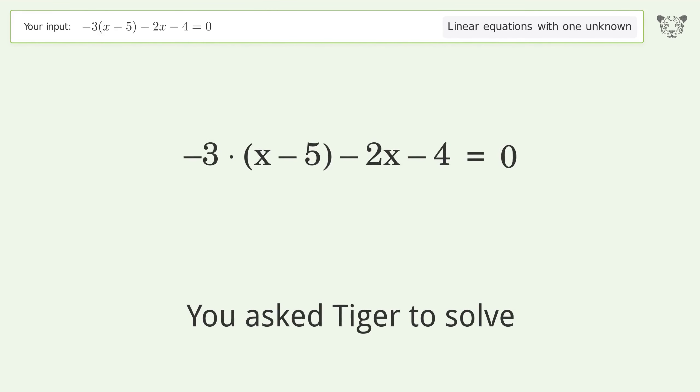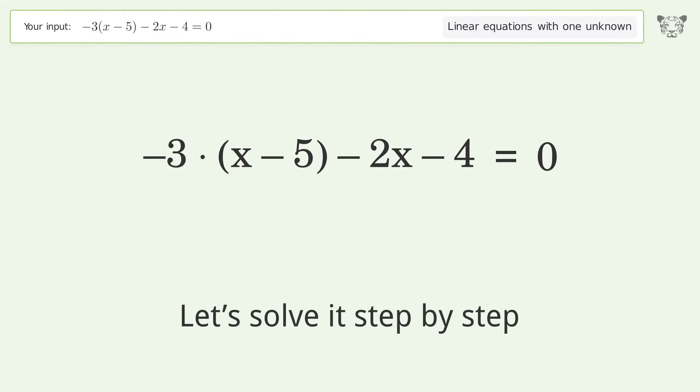You asked Tiger to solve this. This deals with linear equations with one unknown. The final result is x equals 11 over 5. Let's solve it step by step.